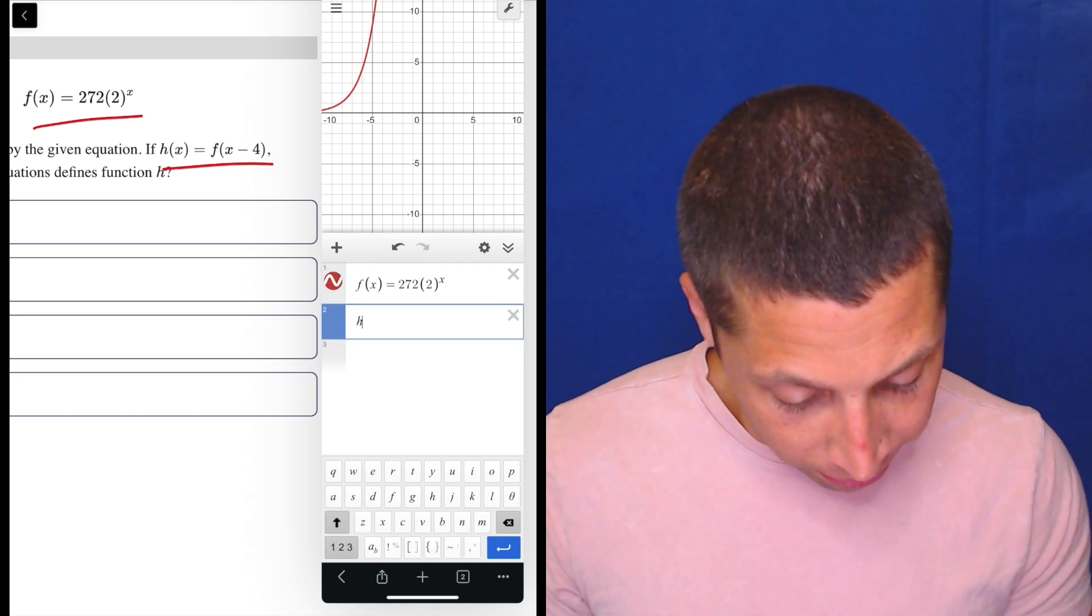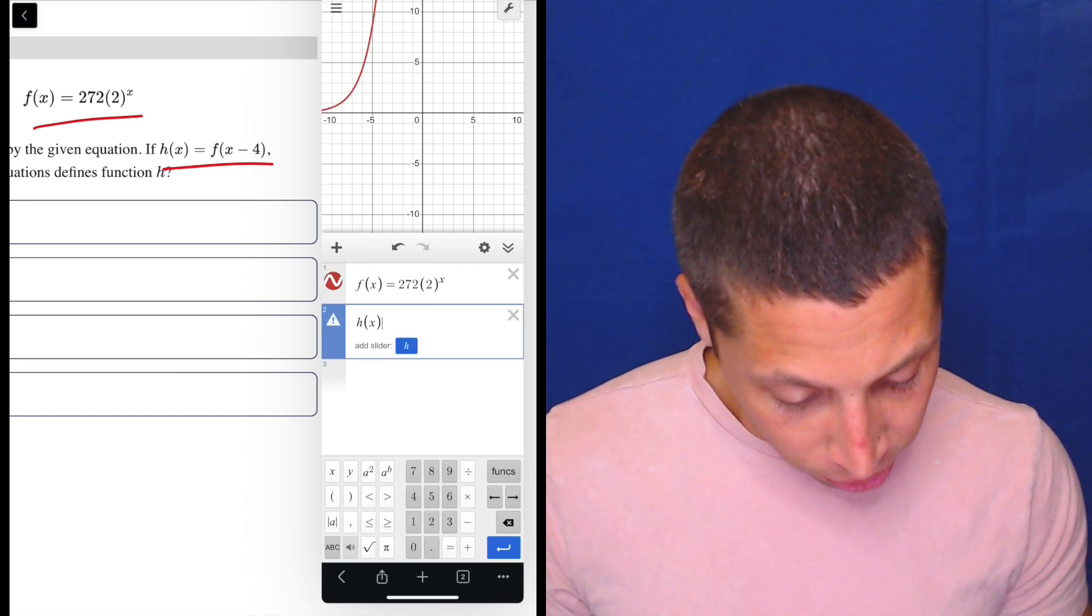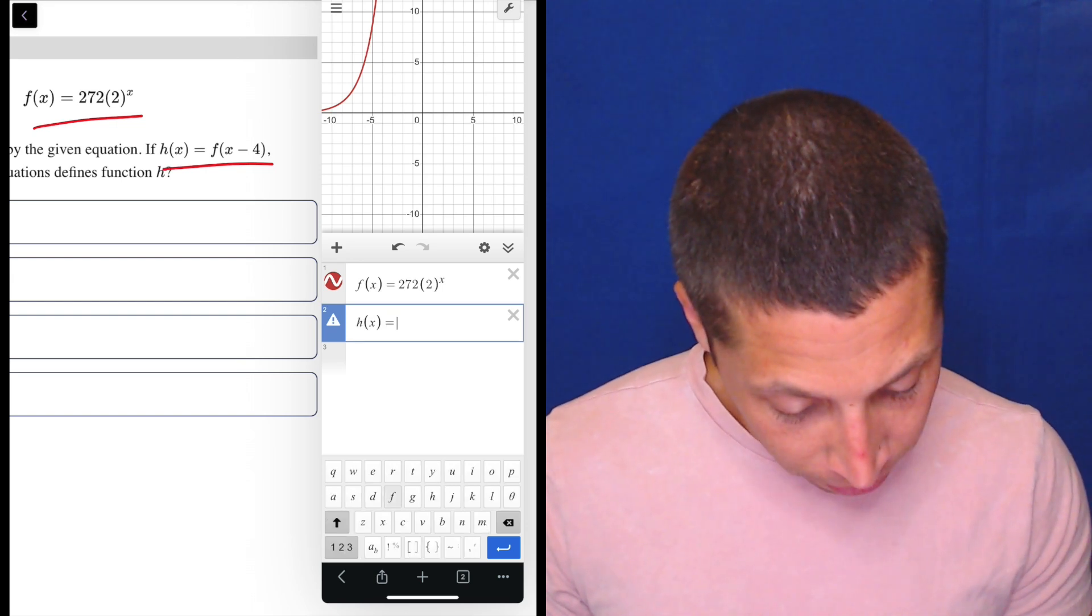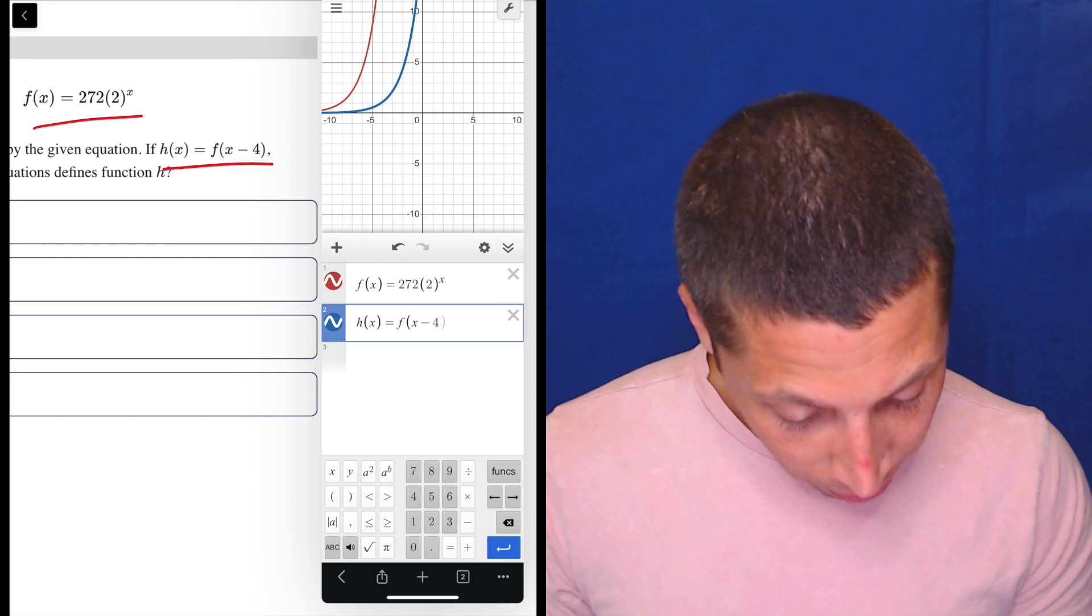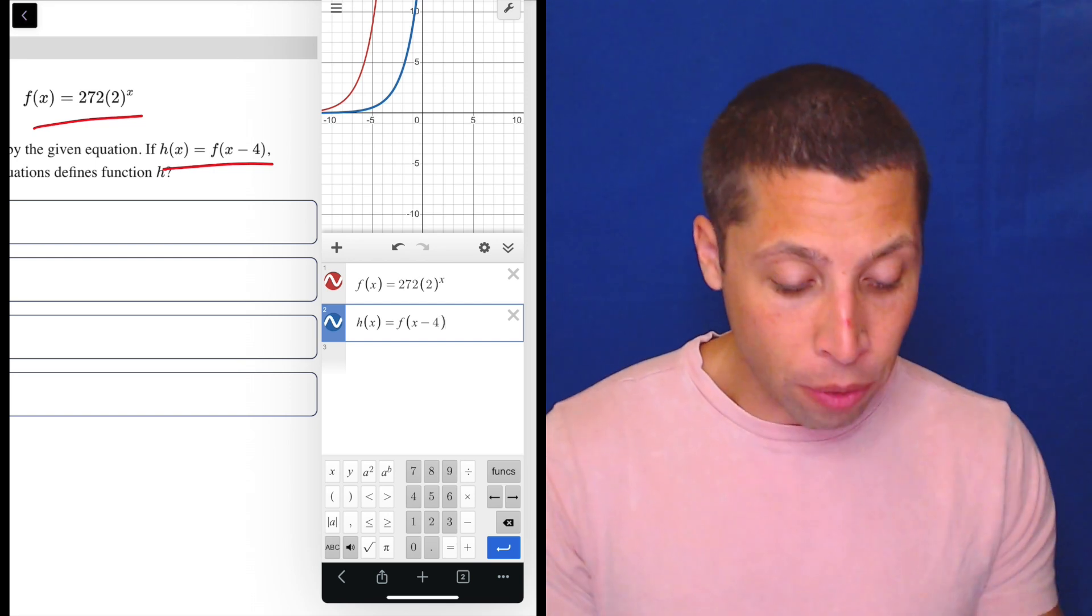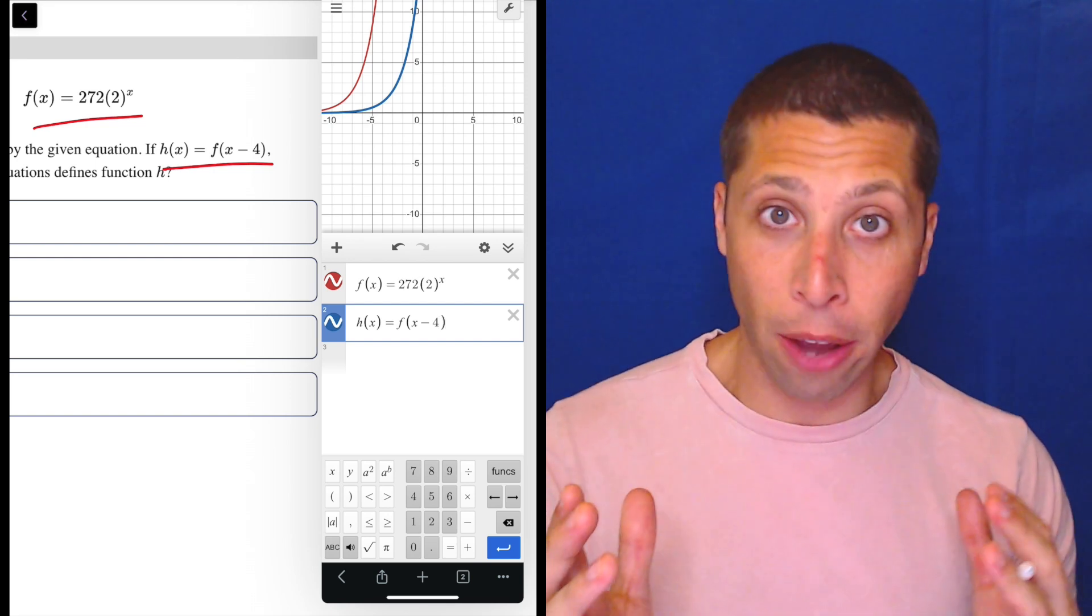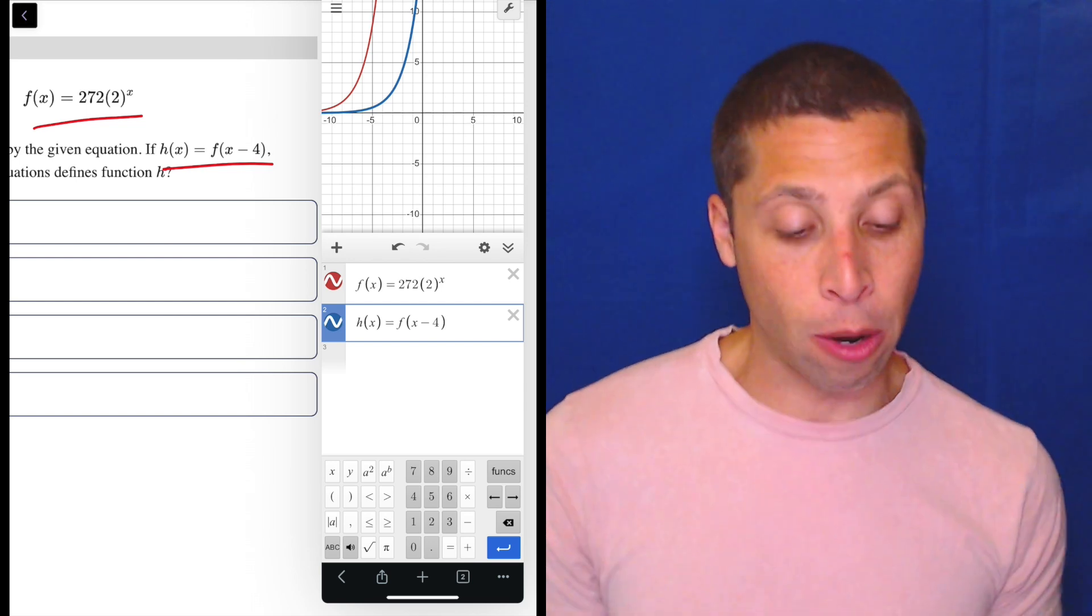Well, they want h of x, and they tell us exactly what h of x is. So h of x is equal to f of x minus 4. And you can see what happened, right? We shifted the graph, it moved 4 to the right. Now, that's a little counterintuitive. Some of you think it's going to move to the left because it's minus, but nope, that's not how it works.